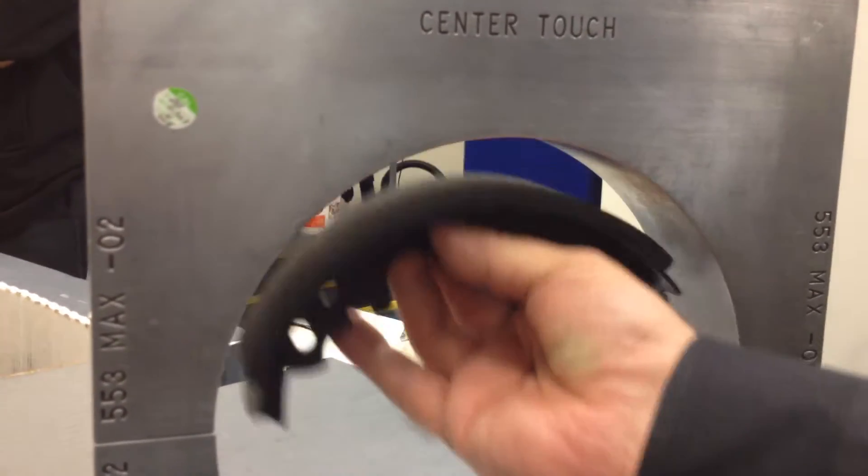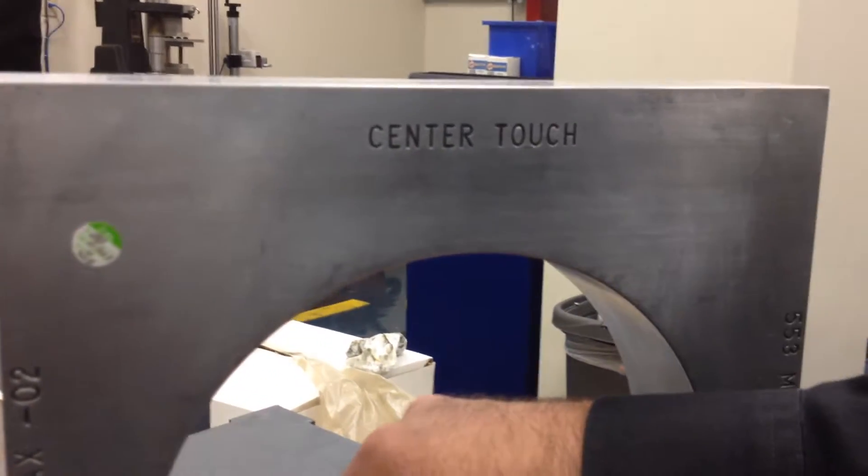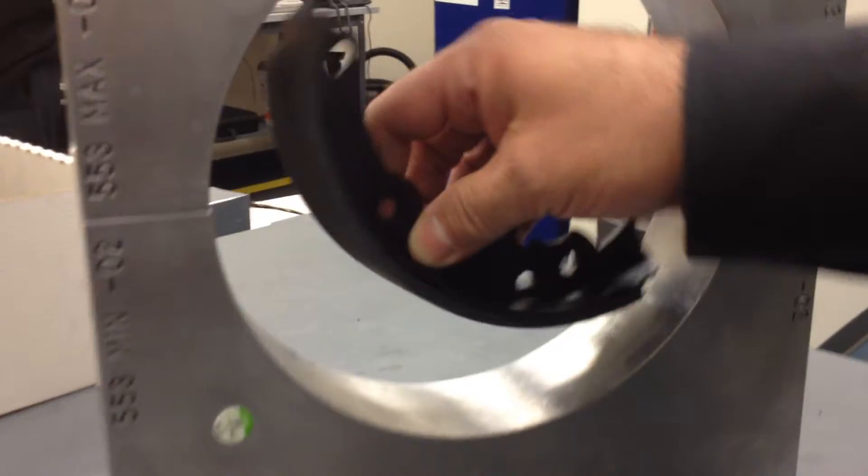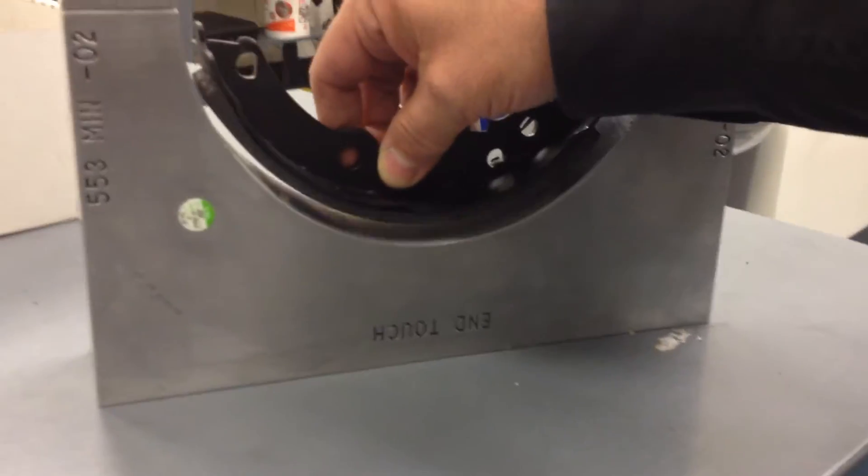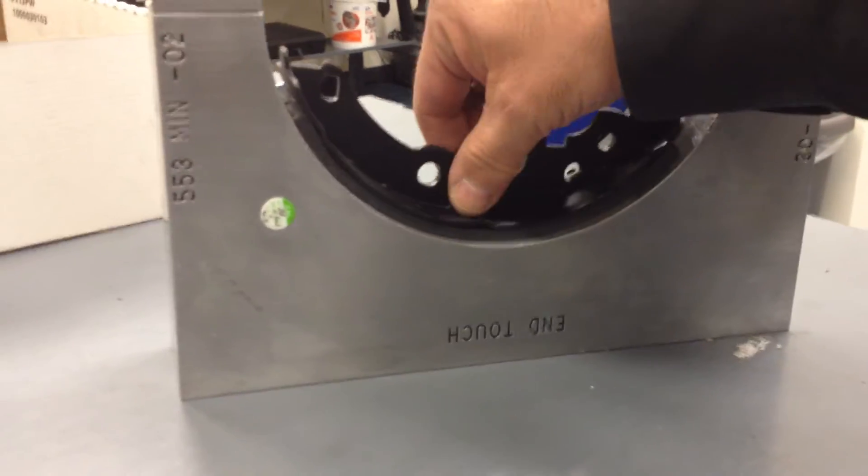That's the center touch where it's rotating off the center and touching in the middle. Now on this lower one, this is a good shoe, right Andrew? Correct.